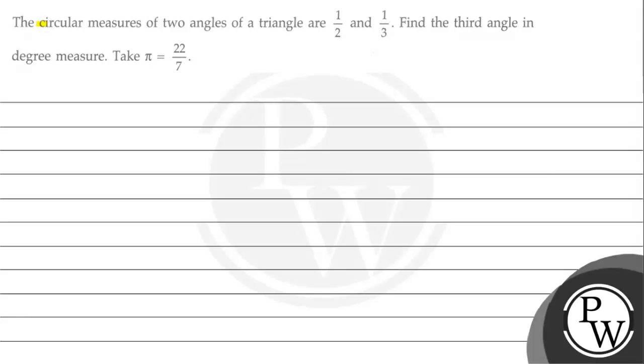Hello, let's read the question. The question says that the circular measures of two angles of a triangle are 1 upon 2 and 1 upon 3.